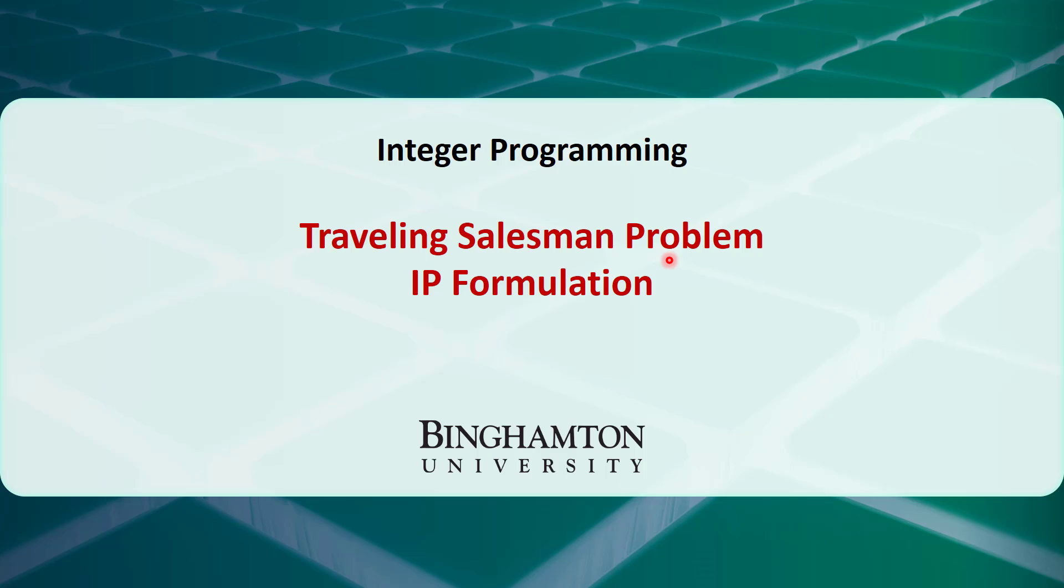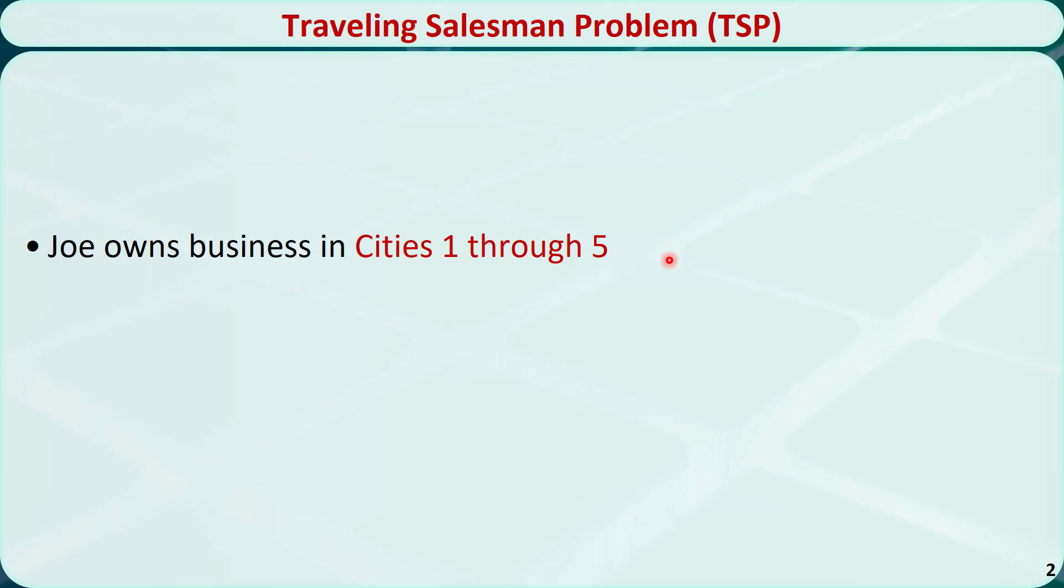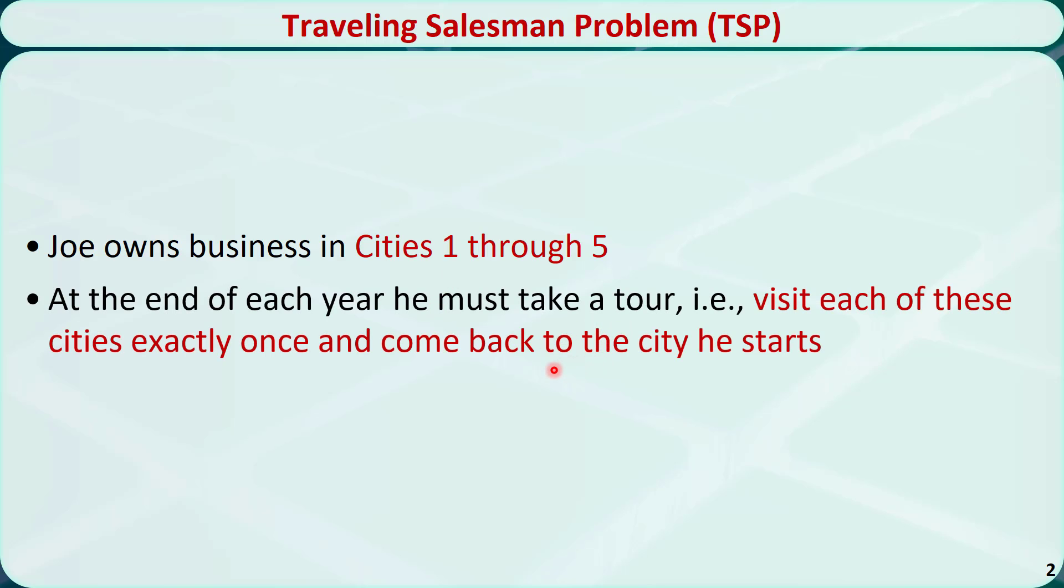An example of the typical traveling salesman problem is described as follows. Joe owns business in five cities. At the end of each year, he must take a tour to visit each of these cities exactly once and come back to the city he starts.